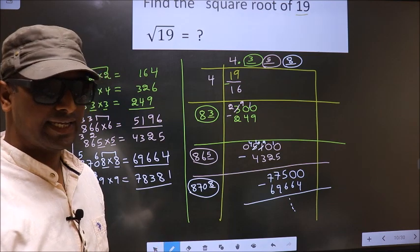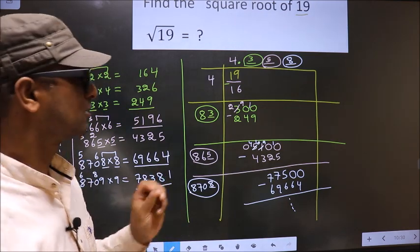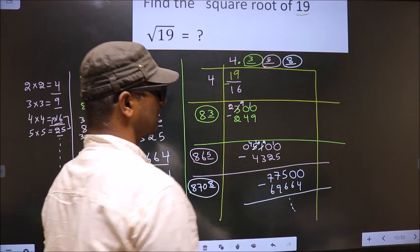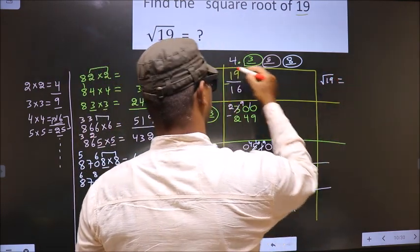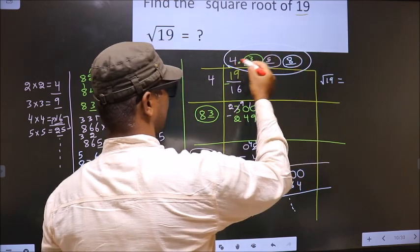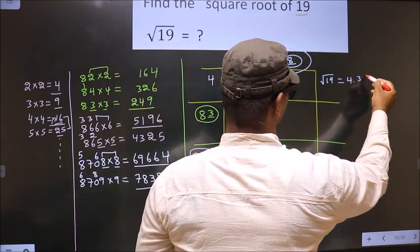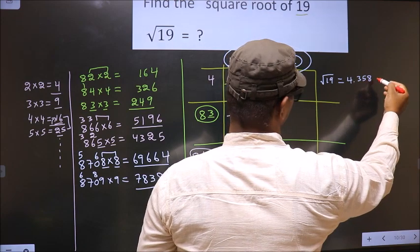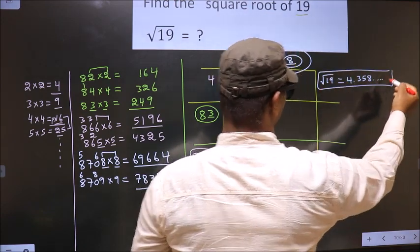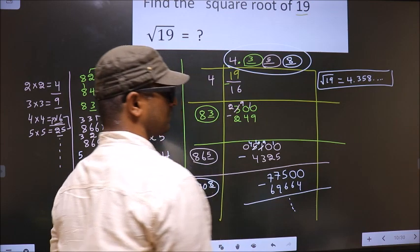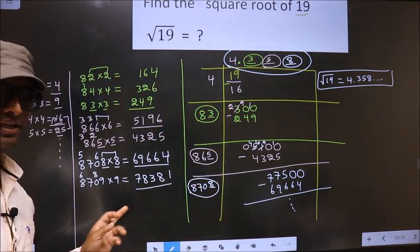Now subtract and it goes on. It is enough if we take up to 3 decimal places. So the square root of 19 is 4.358 and it goes on. This is our answer.